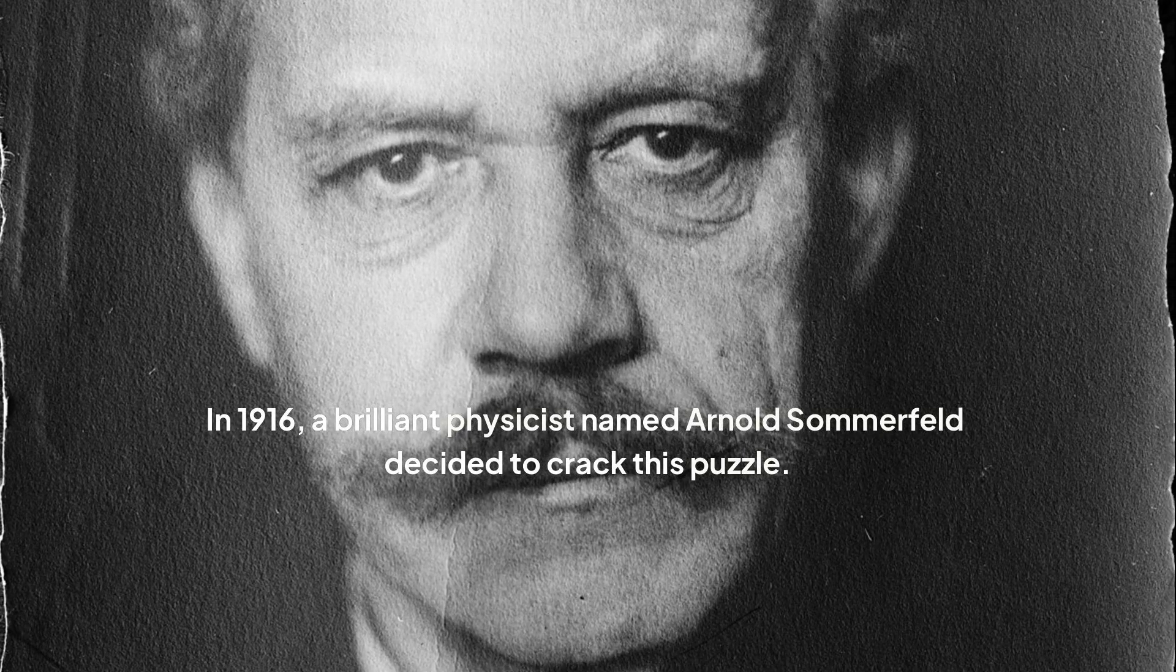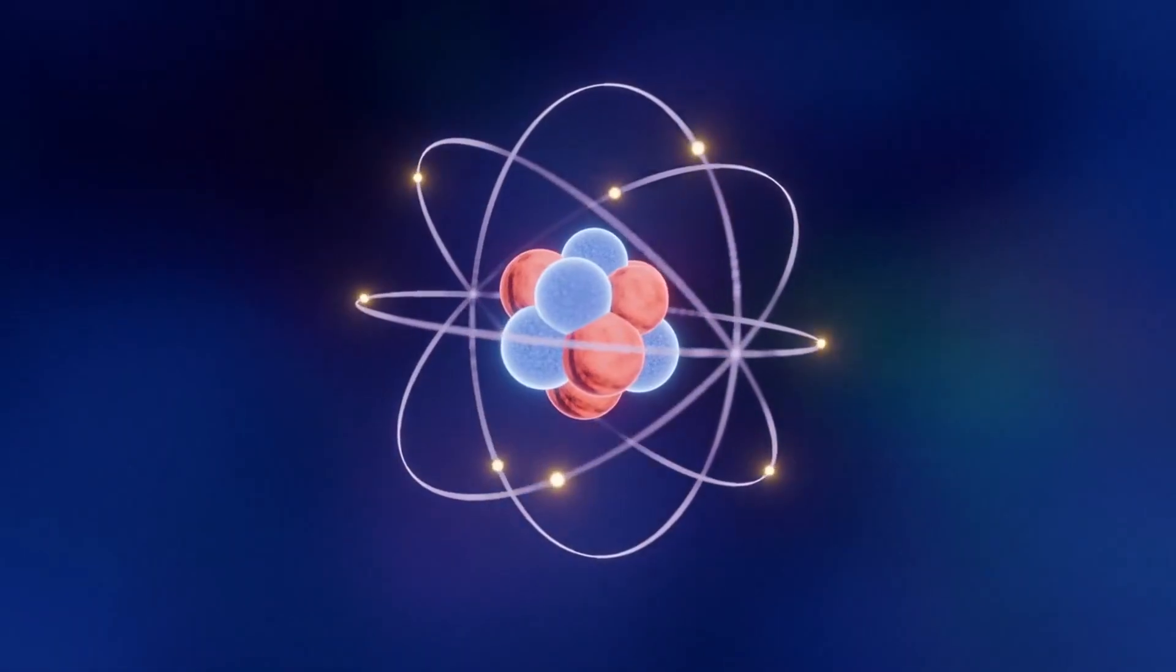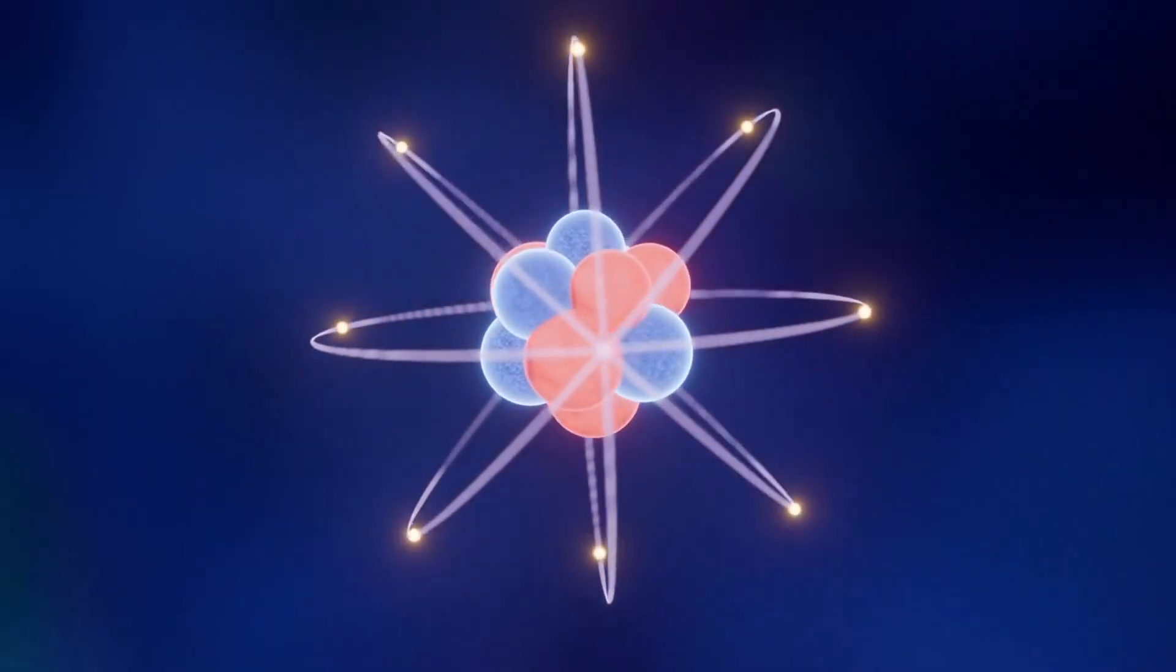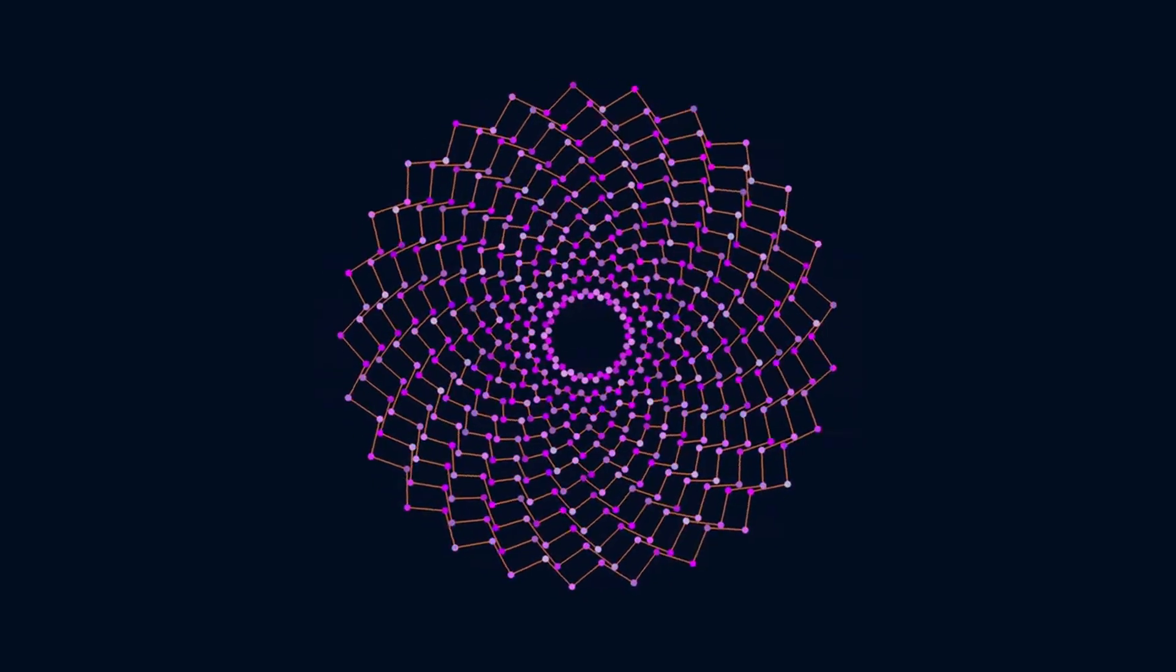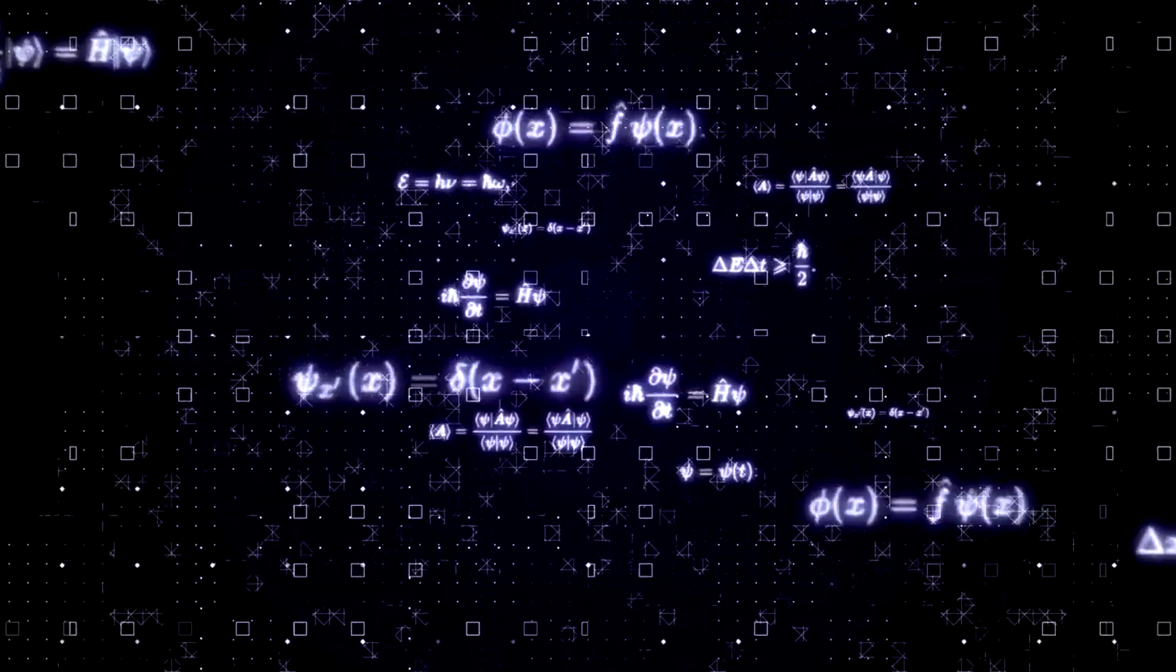In 1916, a brilliant physicist named Arnold Sommerfeld decided to crack this puzzle. He souped up Bohr's model, adding in Einstein's new theory of special relativity and playing with the idea of elliptical electron orbits. As he worked, he found that to make his math perfectly match what was being observed, to explain the splitting of those spectral lines, he had to plug a new number into his equations. That number was alpha. At first, it was basically just a fudge factor, a mathematical patch to make the theory work. Sommerfeld cooked it up from a combination of other known constants—the electron's charge, the speed of light, and Planck's constant.